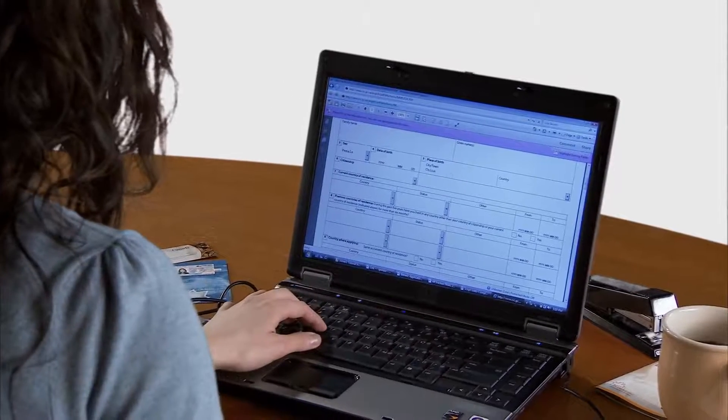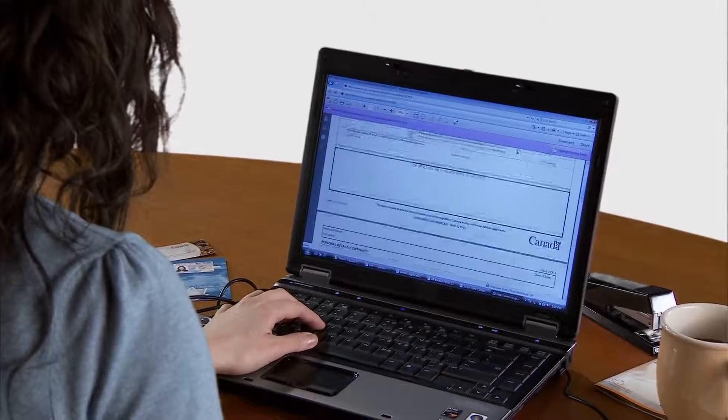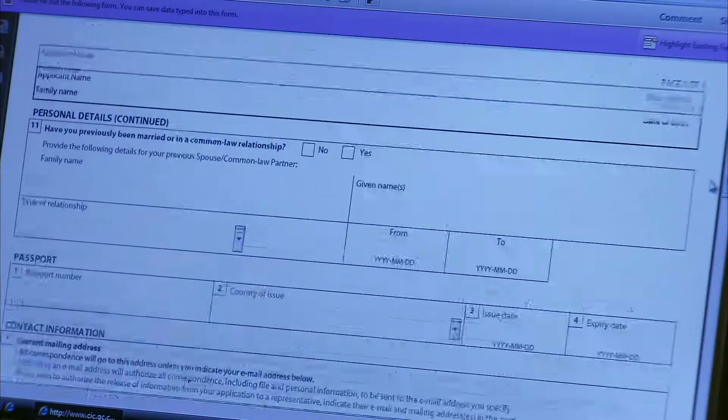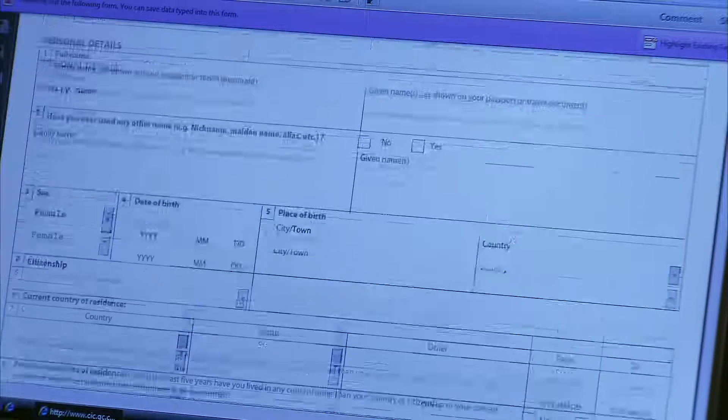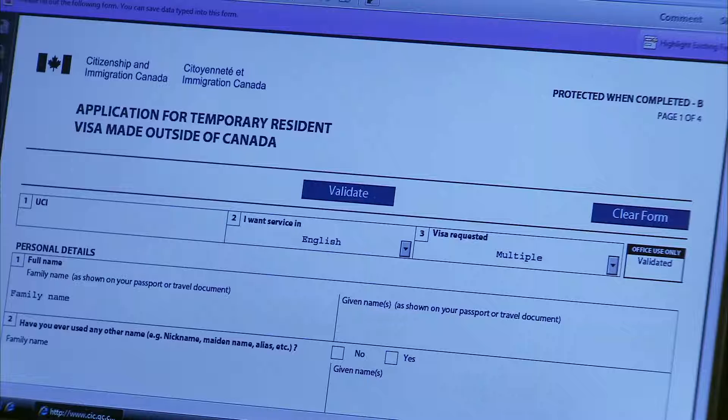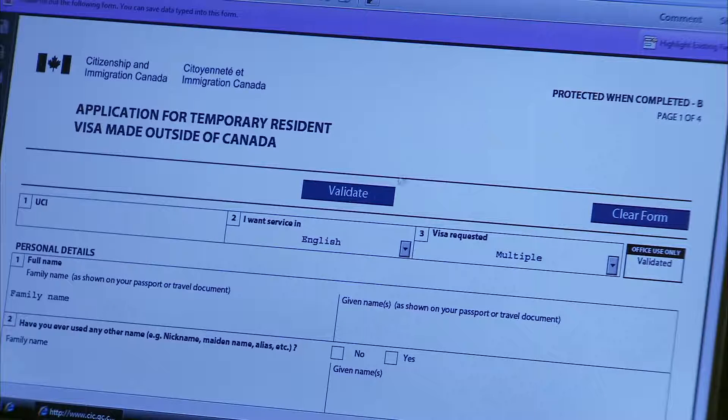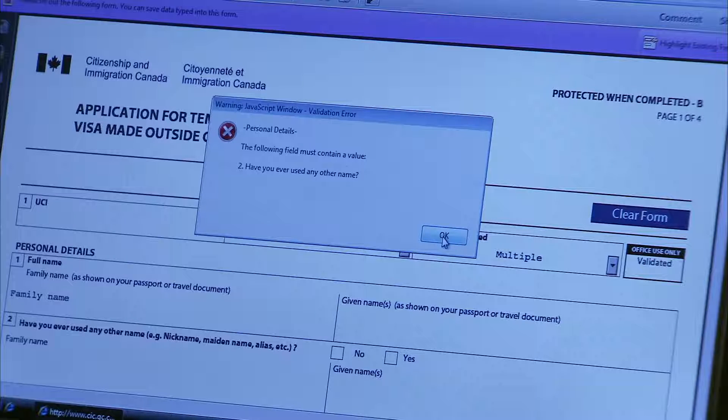Let's start with filling out your application. All of our applications are available online. The best way to fill out your form is on your computer. It's easier to read and process. Some forms include a validate button at the top or bottom of the page. If your form has this feature, make sure to click the button once you've completed the form. This will tell you if you've filled out all sections.